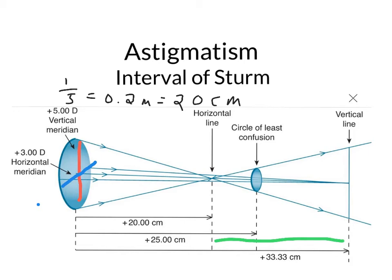You might wonder what the circle of least confusion is. The circle of least confusion is a point in the interval of Sturm where both the horizontal line and the vertical line are equally blurry. If you put a screen at 20 centimeters away from the lens, you would see a very clear horizontal line but a blurry vertical line. If you put a screen at 33 centimeters, you would see a sharp vertical line but a blurry horizontal line. At the circle of least confusion, the vertical line and the horizontal line would both be equally blurry.